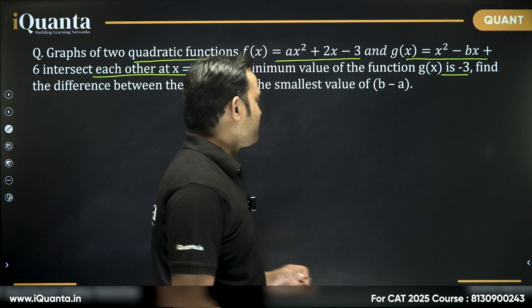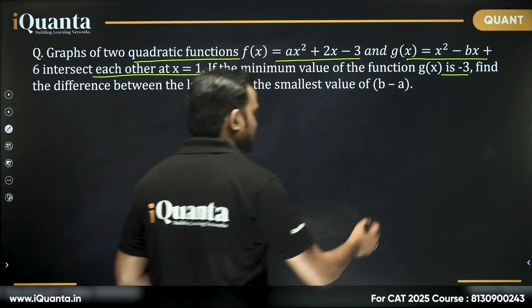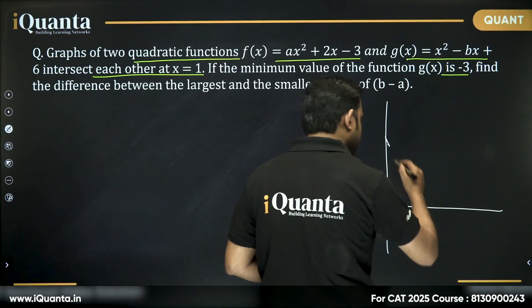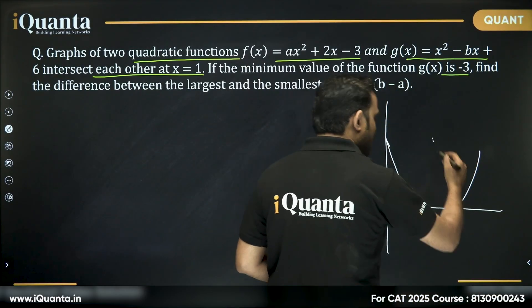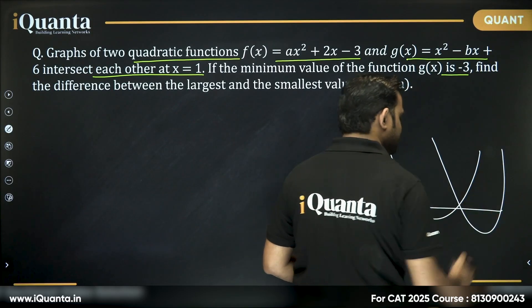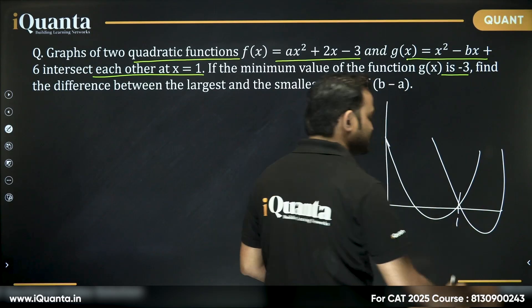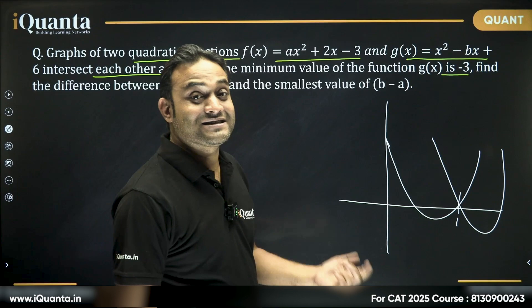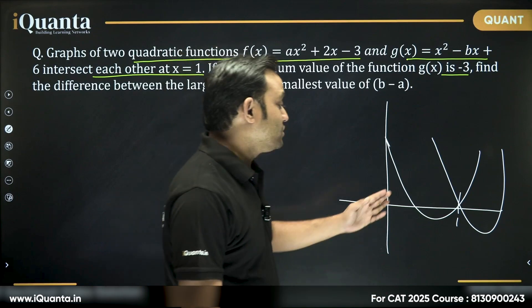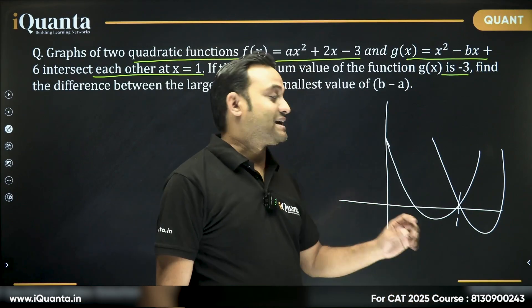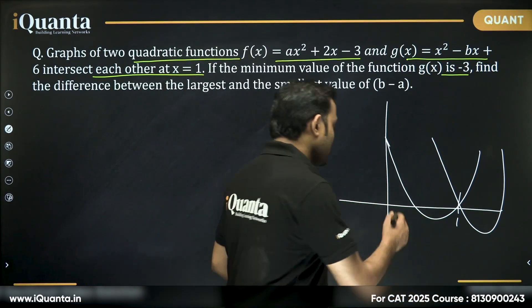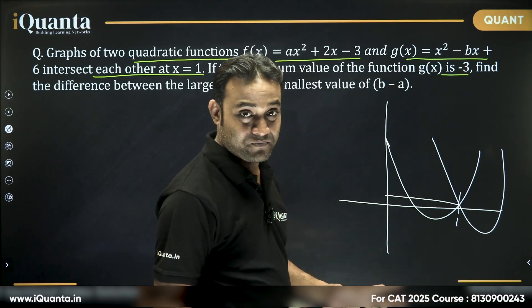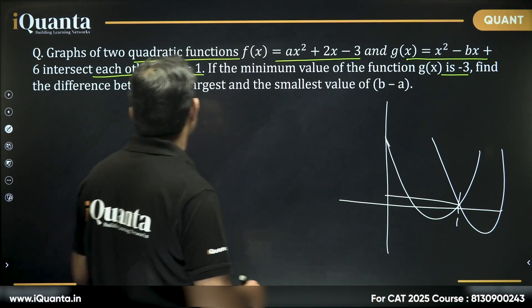So we have two quadratic functions — one of them is like this, another is like this — and they intersect at x = 1. If they intersect at x = 1, we can say that at x = 1, the output in both cases will be the same.